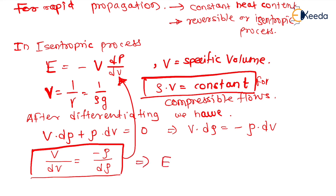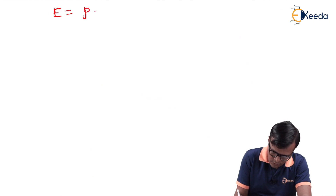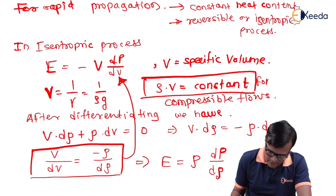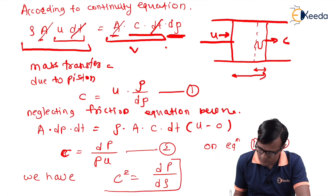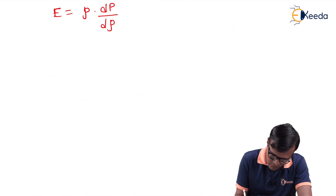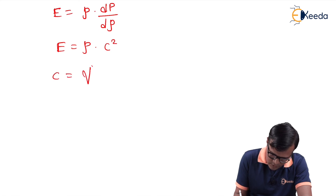Using these substituted terms we get the new equation: E = ρ·dp/dρ. Note the symbols carefully — dp/dρ. Since C² = dp/dρ from our earlier result, substituting gives E = ρ·C², so the value of C is equal to the square root of E/ρ.